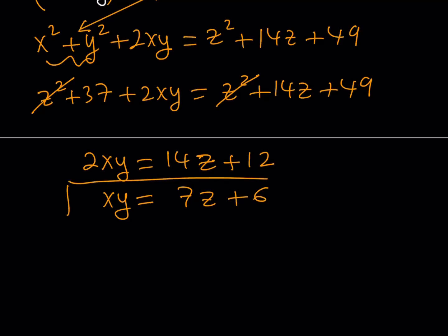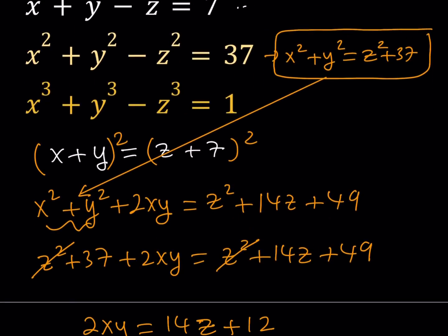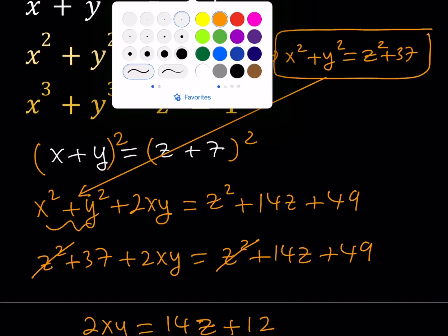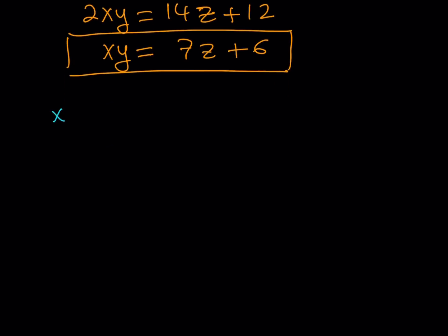So now I got xy in terms of z. Great. Why do I need xy? Because notice that I have the sum of squares, I have the sum of cubes. I'm going to need the product xy. Sort of like a Vieta way, all right? So now, let's work with the third equation. So what does the third equation give us? We have x cubed plus y cubed minus z cubed equals 1.